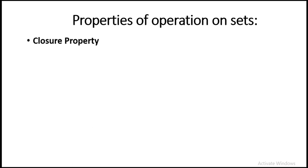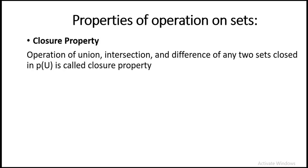So let's get started. The first property we're going to learn is the closure property. Now what is closure property? It says the operation of union, intersection, and difference of any two sets closed in the power set of the universal set is called closure property. Here U means the universal set. Let's consider an example to understand it better.